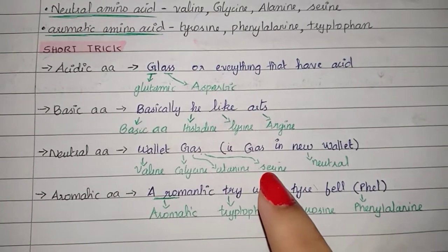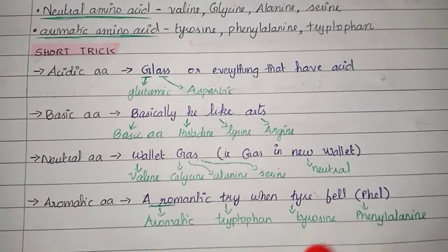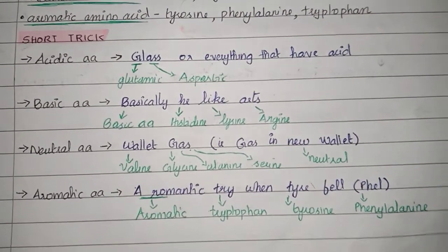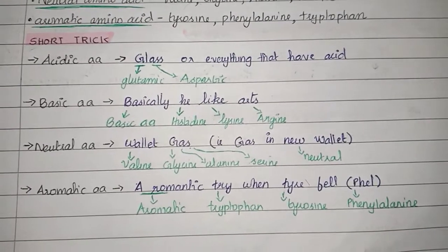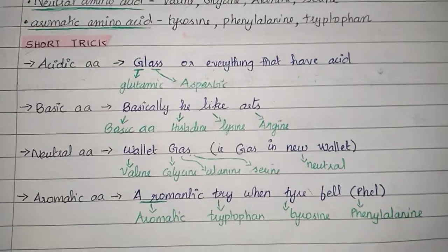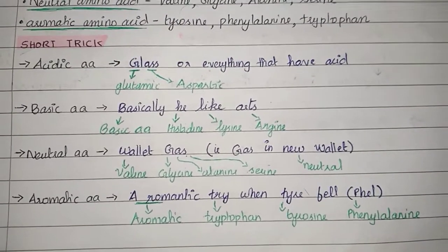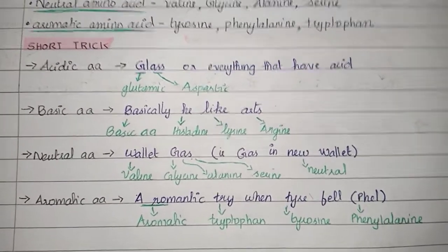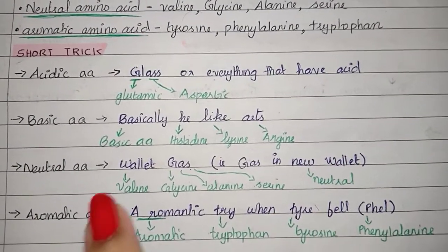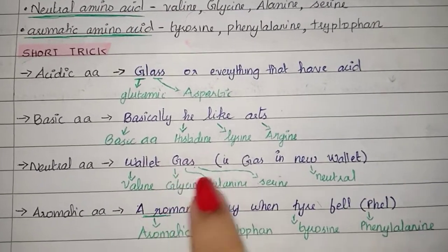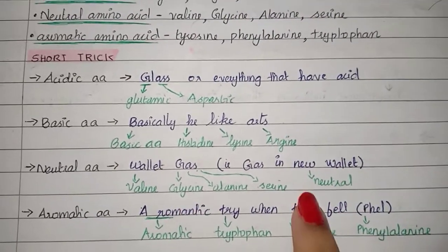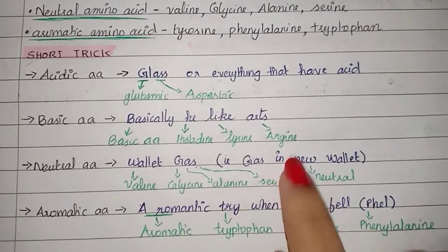For neutral amino acid, the trick is 'gas in new wallet.' When you buy a new wallet, there is no money — just gas. Wallet for valine, G for glycine, A for alanine, S for serine, and new means neutral. So: valine, glycine, alanine, serine — neutral amino acids.